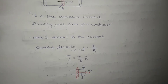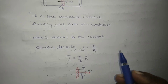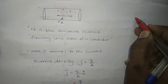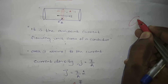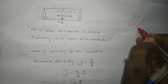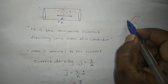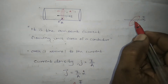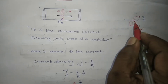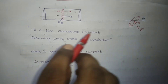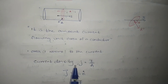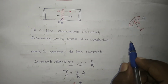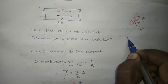Now, if the current is not normal to the area, what will happen? Consider a cross-section area where the current is flowing in a direction that makes an angle theta with the area vector. Based on the current density condition, the area should be normal — that means the area vector and the current should be in the same direction.